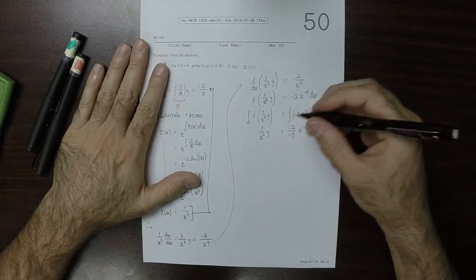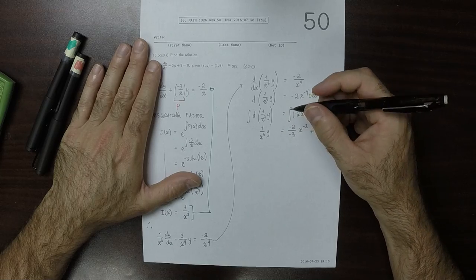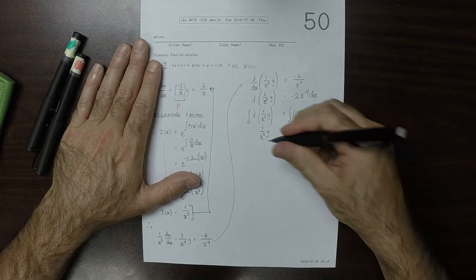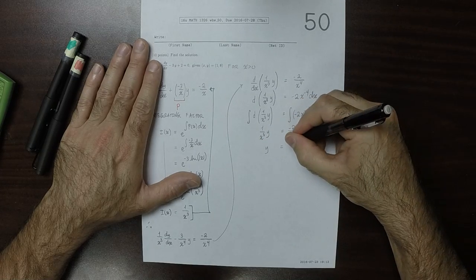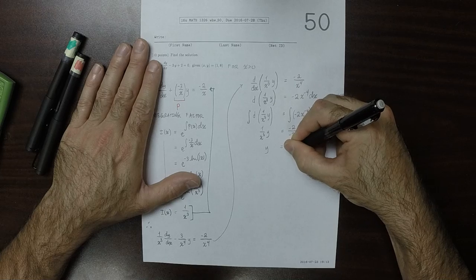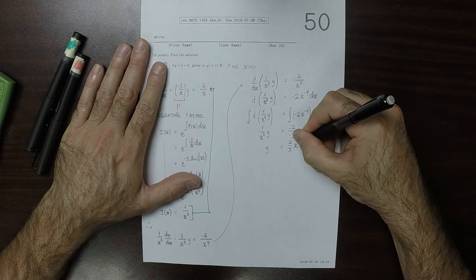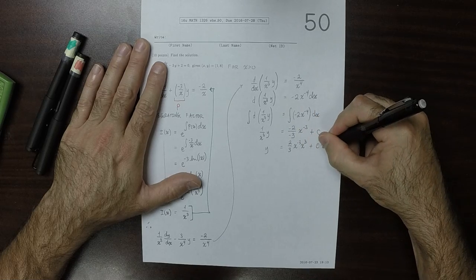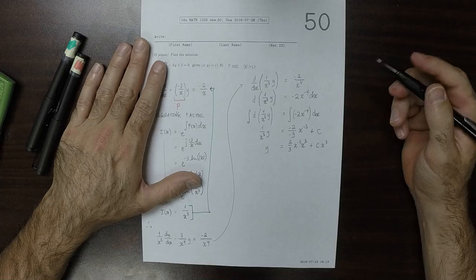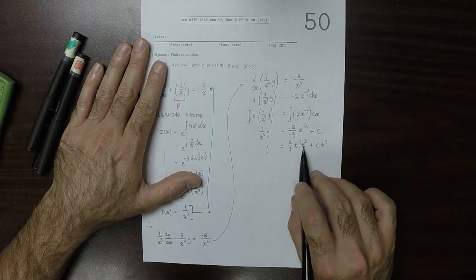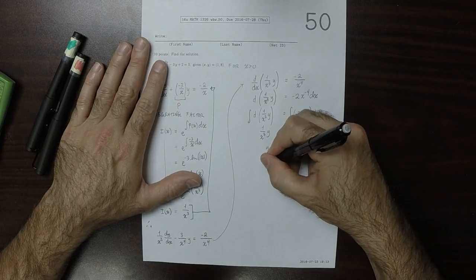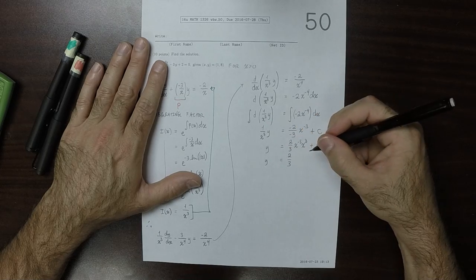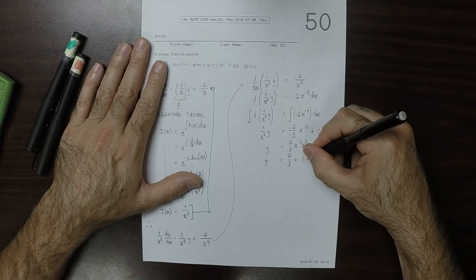Simplifying a little bit, the negatives cancel. We'll multiply both sides by x cubed, so this would be y equals 2/3 times x to the negative 3 times x to the 3 plus c x to the 3. The x to the negative 3 multiplied by x to the 3 cancel. So the general solution is y equals 2/3 plus c x cubed.